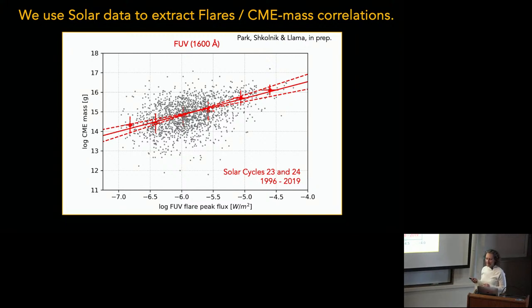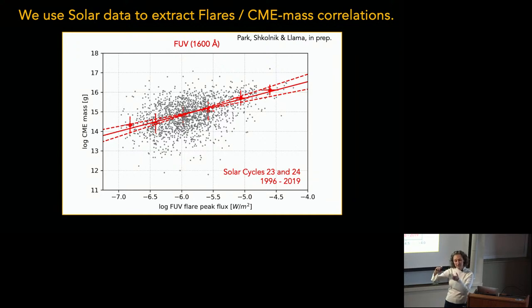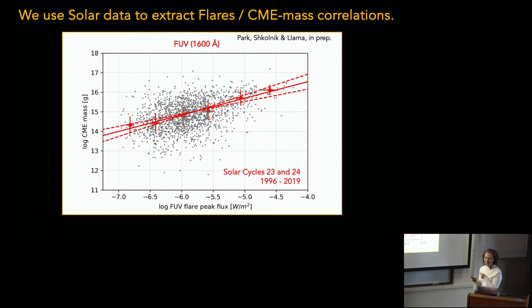How do you measure the mass in a CME? LASCO observes the CME in optical light, adds up all the optical light, and then does some geometric correction for the observing angle. So there are large error bars, but I don't think that explains the whole scatter.